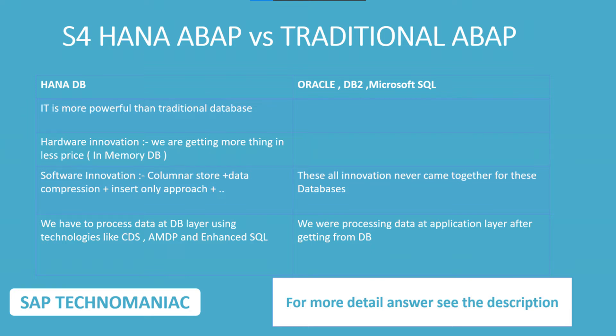the HANA database. The advantage of the HANA database is that it is more powerful because of current hardware innovation — we can get multi-core architecture, CPUs got more powerful, and we are getting those things at a lesser price. And not only hardware innovation, software innovation is also there.